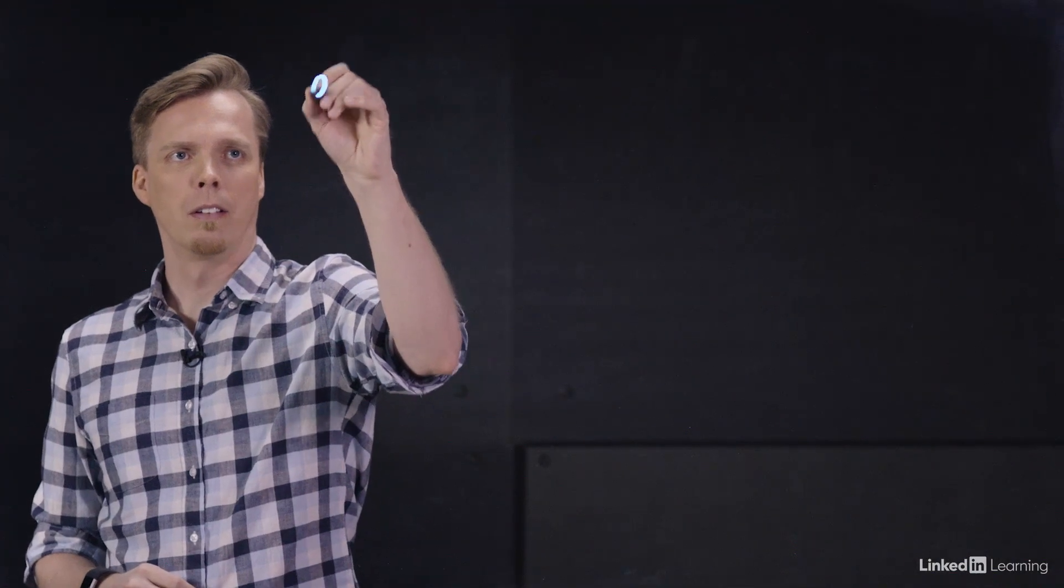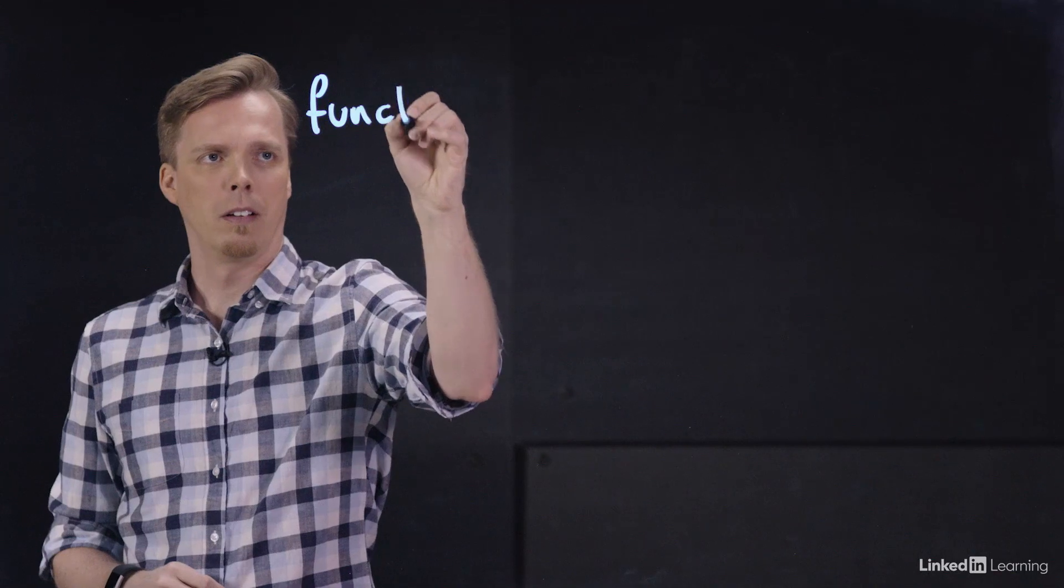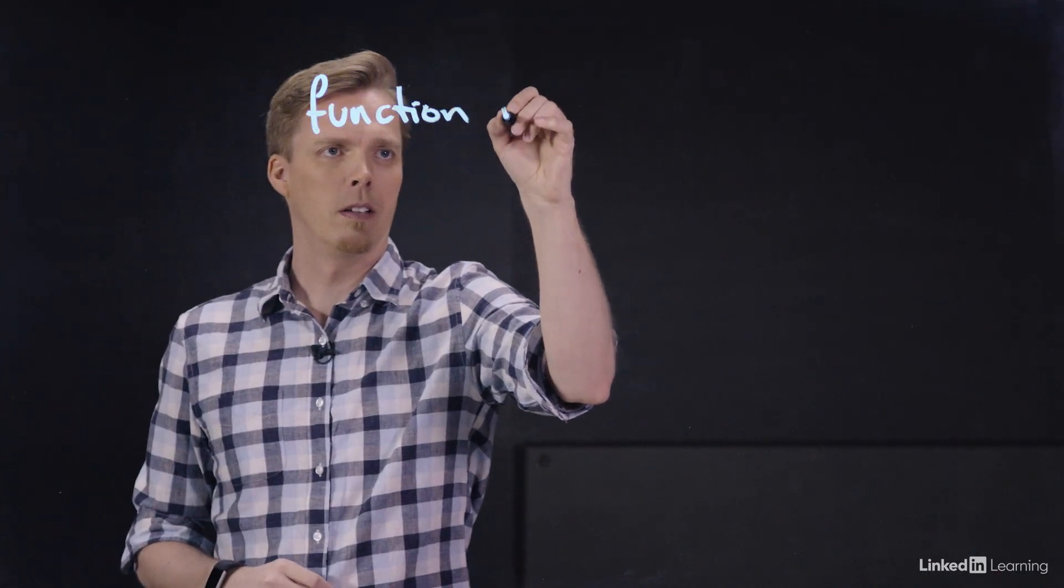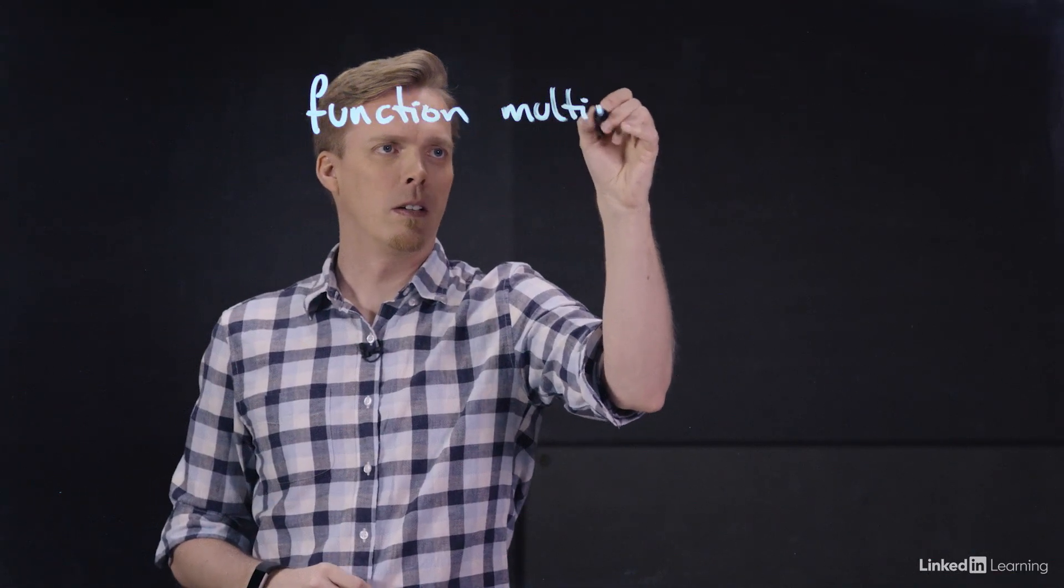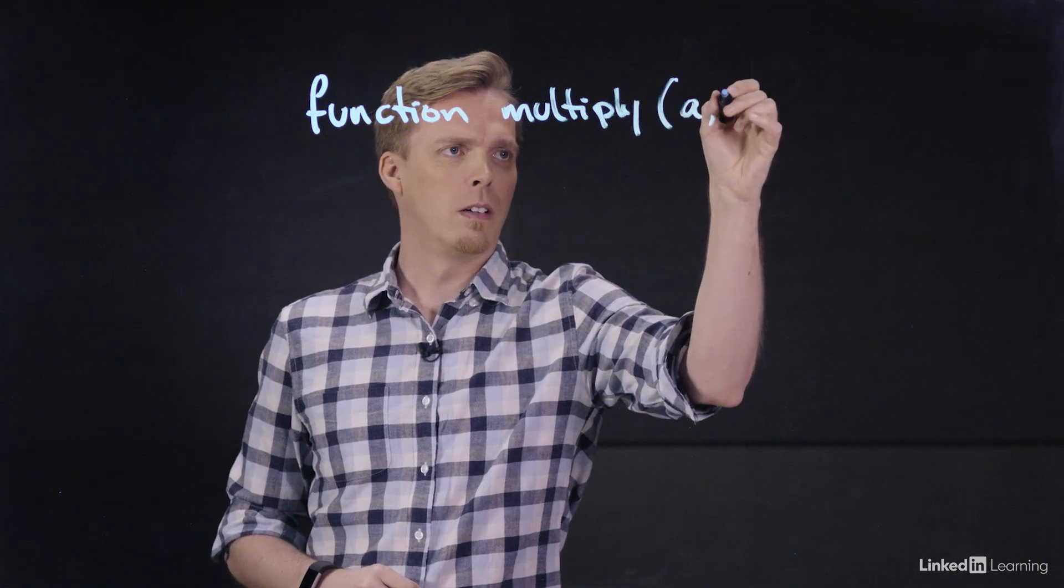To help structure our code and make common operations reusable, we create functions and objects. Functions are mini programs inside our scripts. They can be used to segment off sections of our code to make it easier to manage, or to run repeated operations, or both.